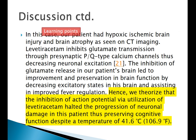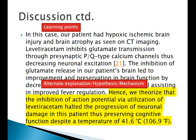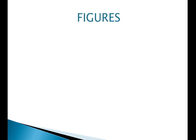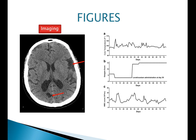In the discussion, you should also have the learning points — for example, an alternate explanation, hypothesis, or mechanism. For instance: 'We theorize that the inhibition of action potential by utilization of levetiracetam halted the progression of neuronal damage.' You should always include figures such as imaging, tables, and graphs to further elucidate your point.